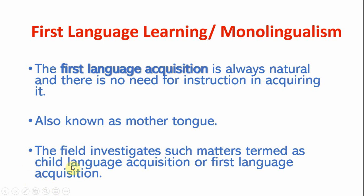The field that investigates such matters is termed child language acquisition or first language acquisition. The field that studies second language learning is called SLA, or Second Language Acquisition. The basic difference between child language learning and second language learning is the distinction between conscious and unconscious experience. First language learning is unconscious, painless, and effortless, whereas second language learning — which continues from childhood to death — is a conscious process and is not an easy process.